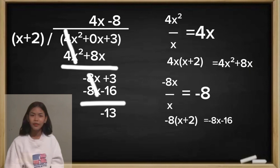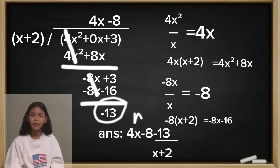Yung napapansin, ang negative 13 ay hindi na natin may didivide sa x. Kaya it will become our remainder. Our answer will be 4x minus 8 minus 13 over x plus 2.